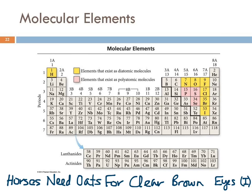We need to know these because if we have one of these elements occurring in, say, a chemical reaction and we have to write the formula for it, it has to be diatomic. If it's iodine, it has to be I2; if it's oxygen, it has to be O2. This applies when these are elements. We need to know these.